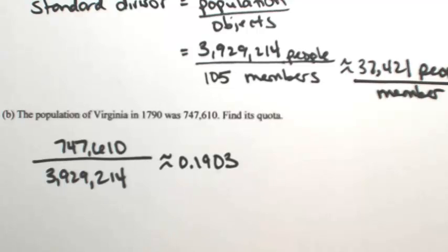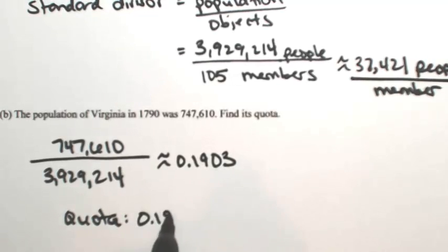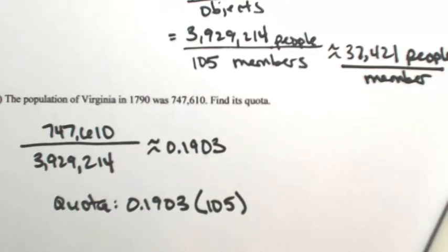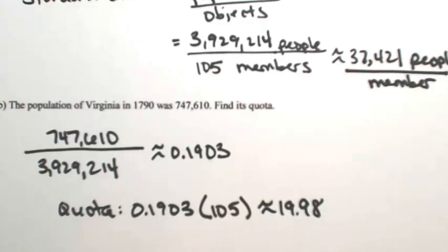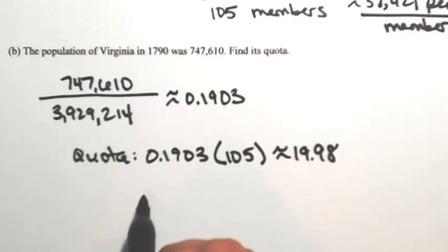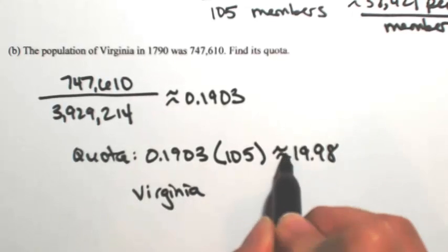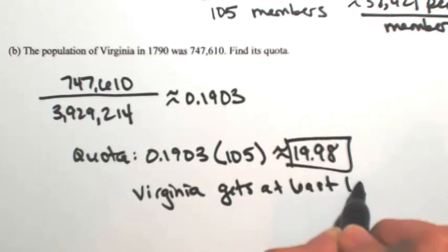So about 19% of the total population belongs to Virginia. To figure out the quota — in other words, how many members Virginia should have — we take 0.1903 and multiply that by the total number of members. So about 19% of 105: 0.1903 times 105 gives us about 19.98. So of the 105 members, Virginia should get at a minimum 19. Maybe they'll get 20 — we don't know. But at a minimum, Virginia's quota is at least 19 members.